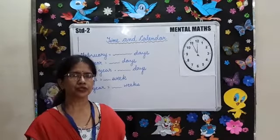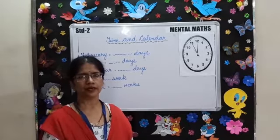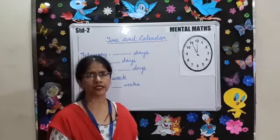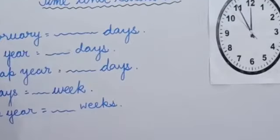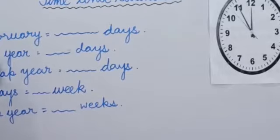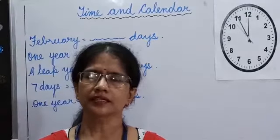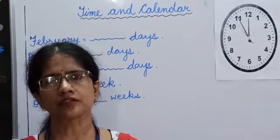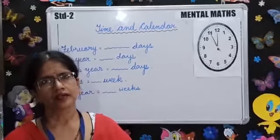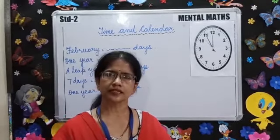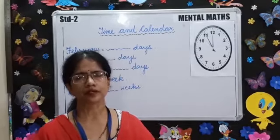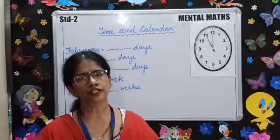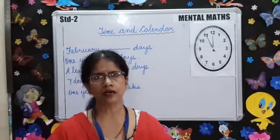Do you know, children? February is a special month. It has 28 or 29 days. Every 4 years it has 29 days. That year is called a leap year. There are 365 days in a year and 366 days in a leap year. 7 days make a week and 52 weeks make a year.